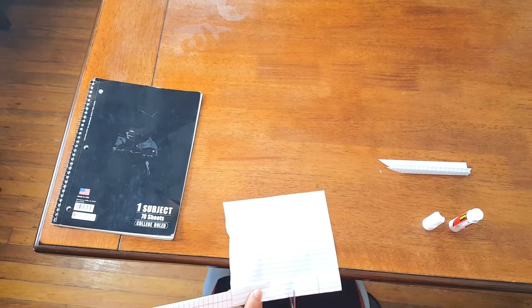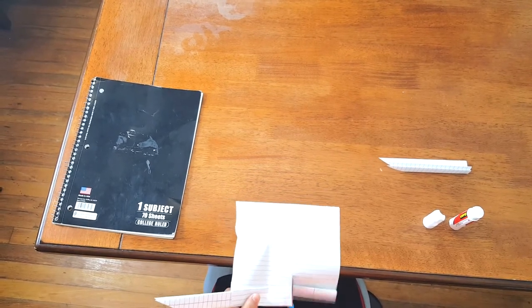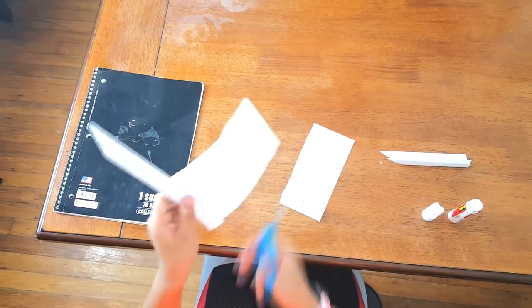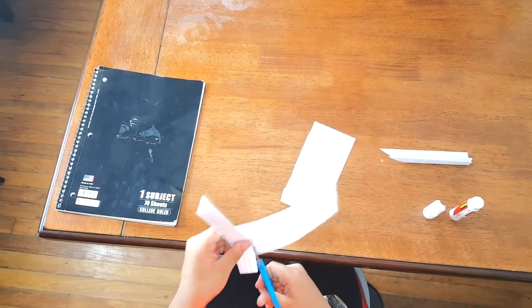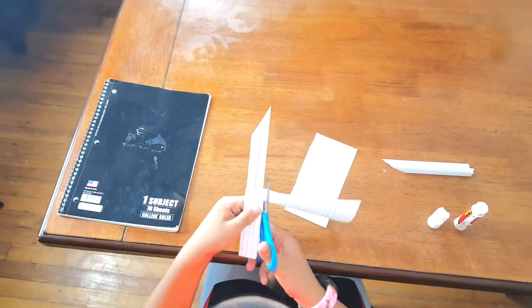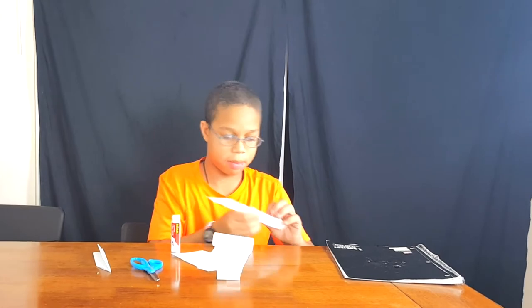Get your scissors. So then you're going to want to leave a strip like this. Cut it all the length. Cut the extra piece like this. Then when you're done cutting. Cut the pieces. And your scissors back.